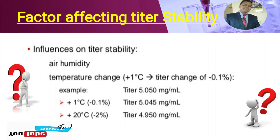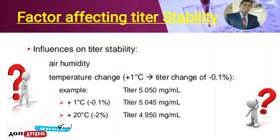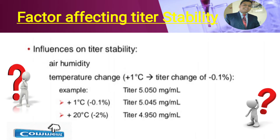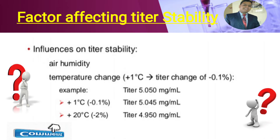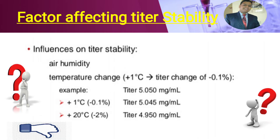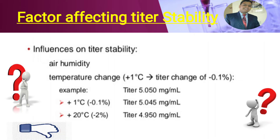Factors affecting titrator stability are shown on the screen. The KF reagent is influenced by air, humidity, temperature, and light. A 1-degree increase in temperature reduces KF factor by 0.1%. For example, if we have the factor 5.050 mg per ml and we increase the temperature by 1 degree, there will be a decrease of 0.1%. If we increase the temperature by plus 20 degrees Celsius, there will be a decrease of minus 2% in the Karl Fischer factor.